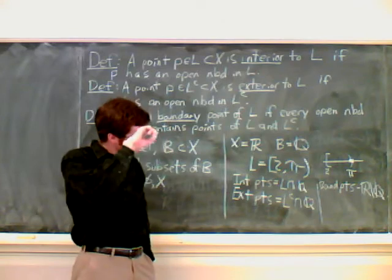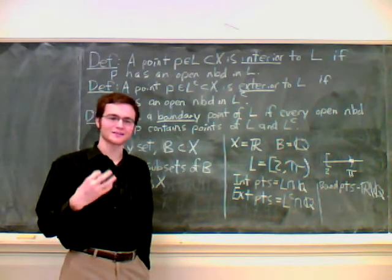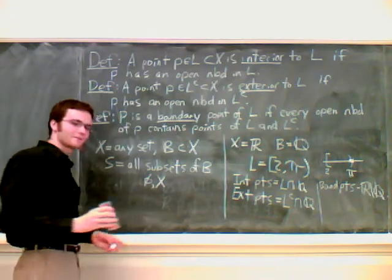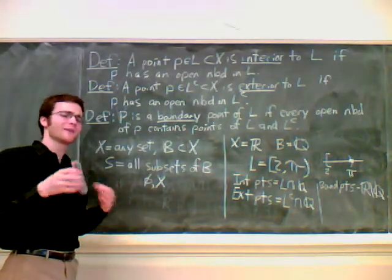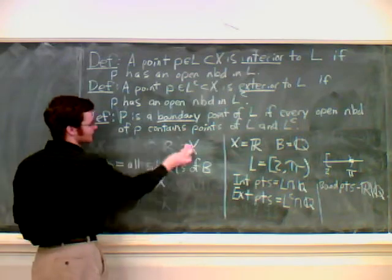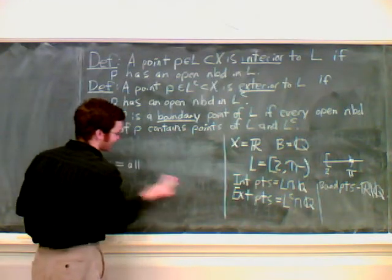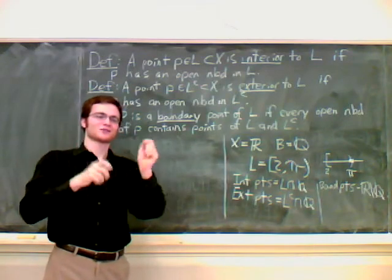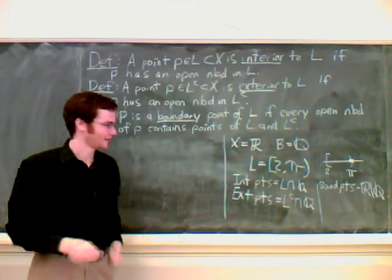This is odd. This is not what we're expecting and what we're used to. The rational numbers where the boundary was everything kind of makes sense because it's dense—there's a whole lot of them everywhere. You can kind of expect that the boundary could maybe be everything.